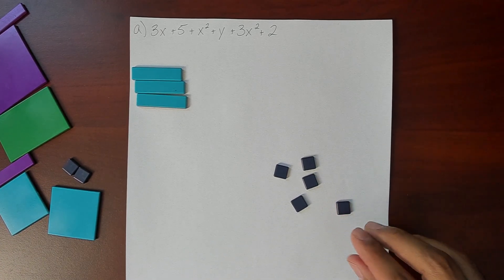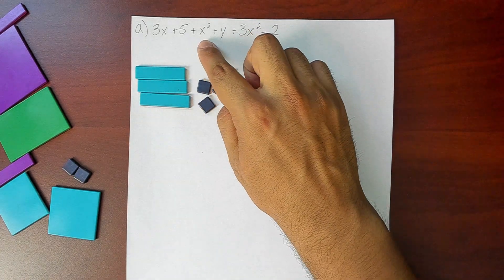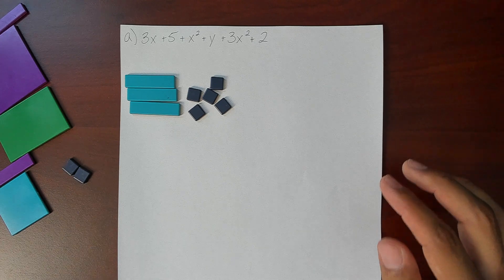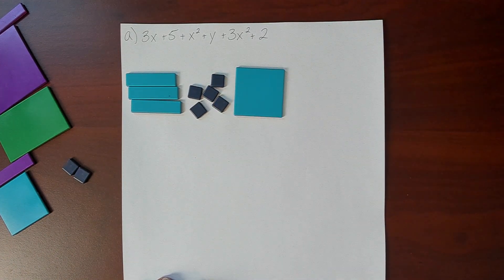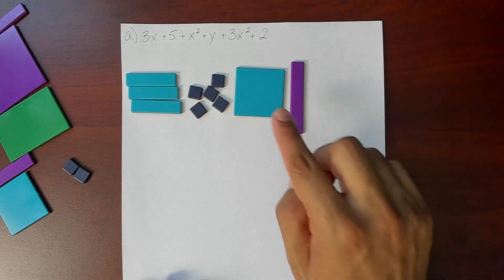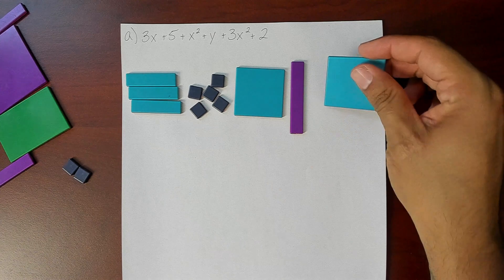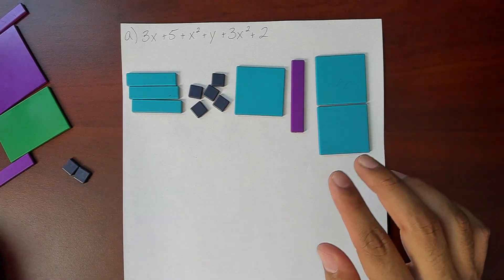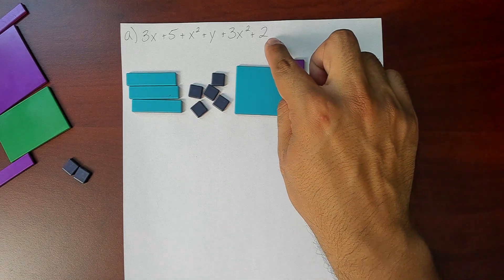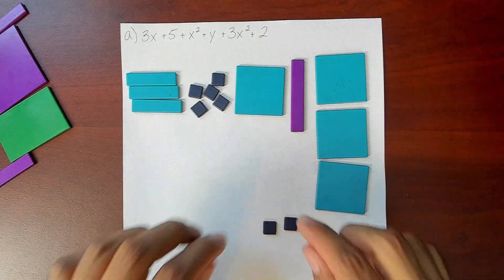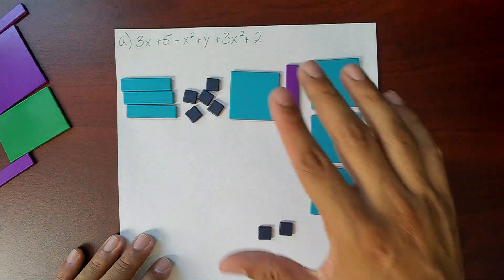Then it says to add an x squared tile. Well I have one right here, perfect. Now it says a y tile, here's my y tile. Then it says wow, three of these x squared tiles. There we go, three of our x squared tiles. And then last but not least it wants two more unit tiles.